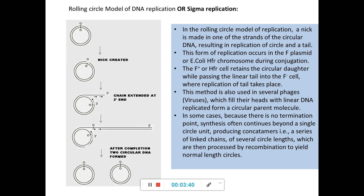In the rolling circle model, which occurs mainly in plasmids, a nick is made in one strand of the circular DNA, resulting in replication of the circle and the tail. So from a double-stranded plasmid, a single-stranded cut — a nick — is formed in one strand, and then the chain is extended with a new DNA strand added at the 3' end, and the newly formed strand is displaced.